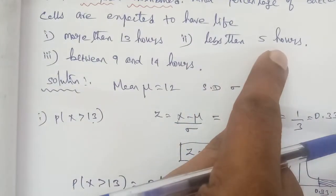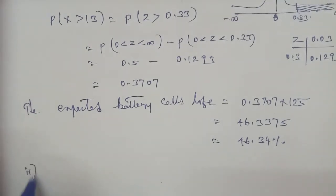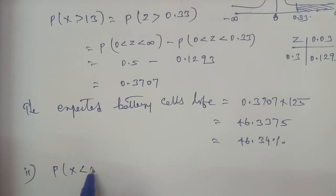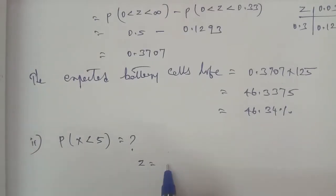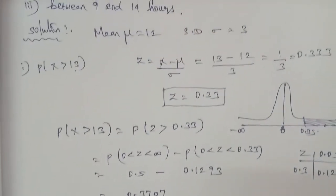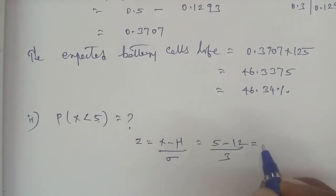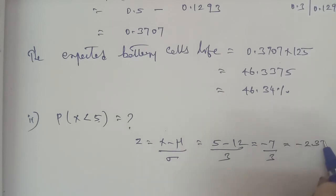Submission 2: less than 5 hours. P(X < 5). Using the formula Z = (X − μ) / σ, substituting X = 5, μ = 12, σ = 3: Z = (5 − 12) / 3 = −7 / 3 = −2.33. So Z is equal to −2.33.